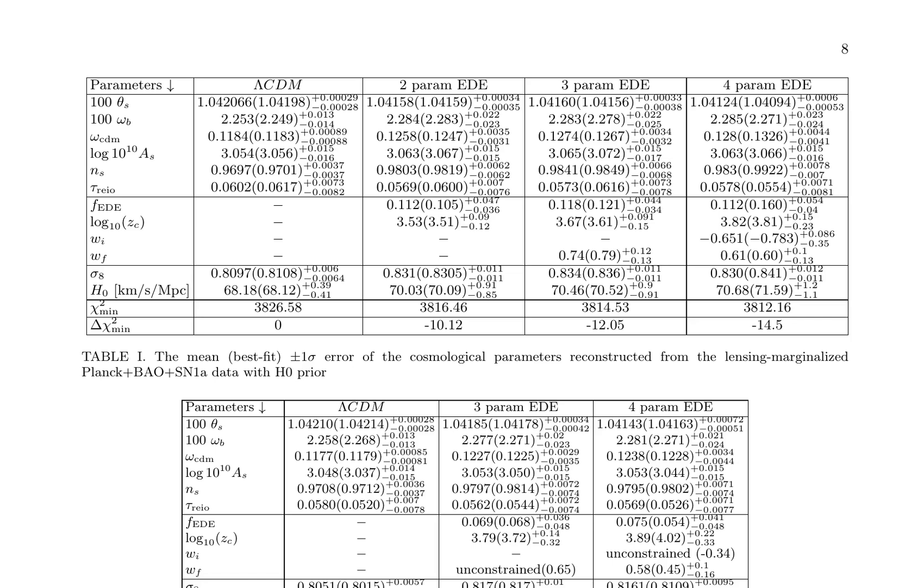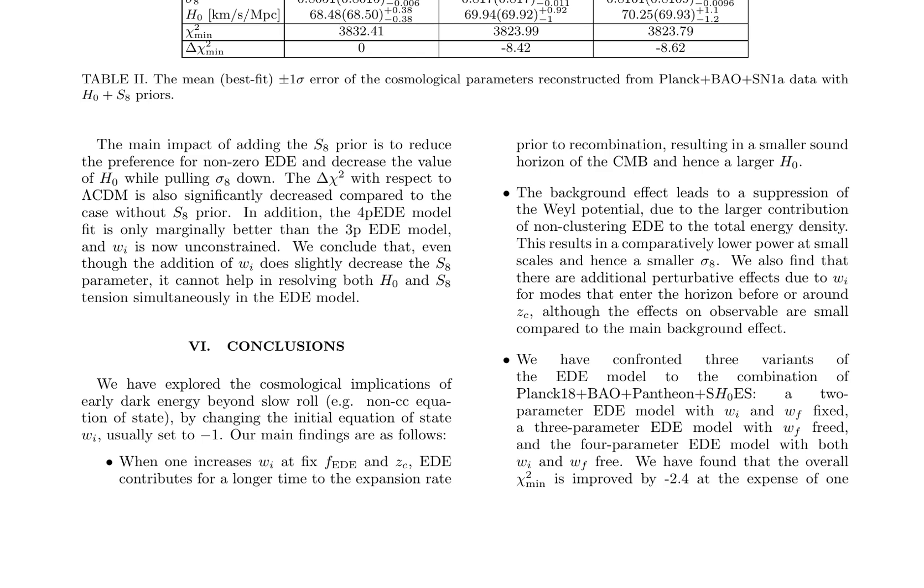The study delves into the implications of early dark energy (EED) beyond the slow roll approximation, particularly examining the role of the parameter WI, typically set to negative 1. By varying WI, the expansion rate prior to recombination changes, resulting in a higher Hubble constant H0 and a lower matter density sigma 8. This background effect leads to a suppression of the whale potential, which in turn causes a decrease in power at small scales. The analysis employs three variants of the EED model, each with different degrees of freedom for WI and WF. The results demonstrate an improvement in chi-squared minimum of 2.4, indicating a better fit to the data. However, introducing WI does not alleviate the tension between H0 and S8 simultaneously in the EED model. This highlights the complexities involved in reconciling the discrepancies between local and cosmic measurements of these parameters.